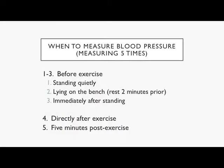We're taking five blood pressure measurements today. Before you start exercise, you'll take three: one standing up, then lay on the bench and wait two minutes to acclimate, then take it again. After that, stand up and measure immediately after standing from lying down. Then do your exercises. As soon as you're done exercising, take another blood pressure measurement. Then five minutes after exercise, take it again. You don't need to do the 10-minute post-exercise measurement — just five minutes.